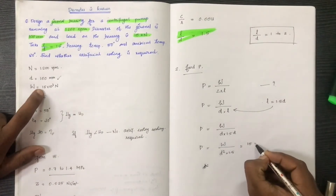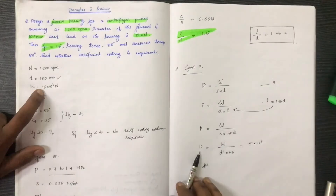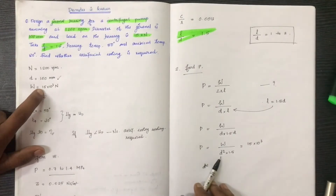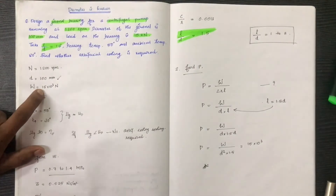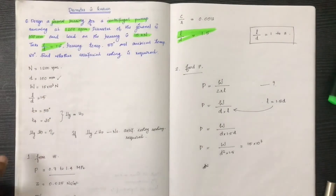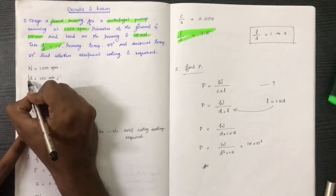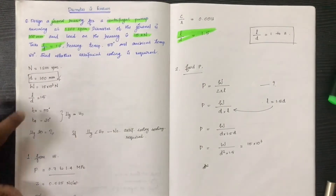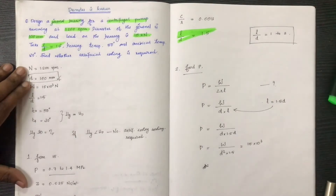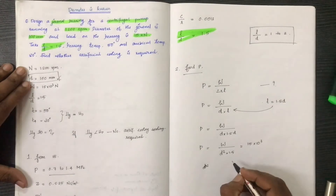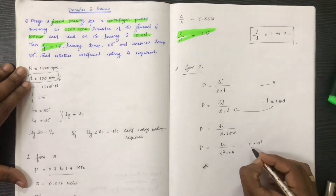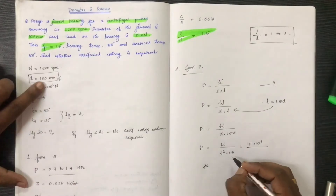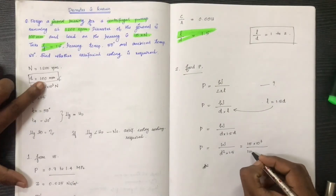With W equal to 15 × 10³ N and P equal to 1 MPa, solving gives D equal to 100mm.